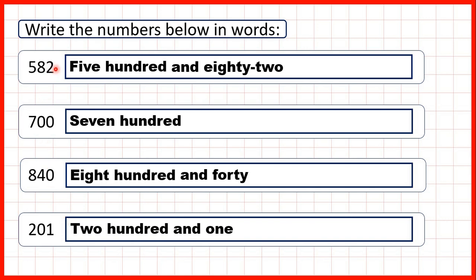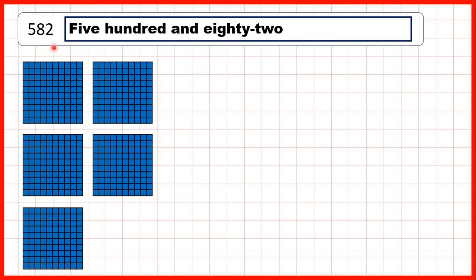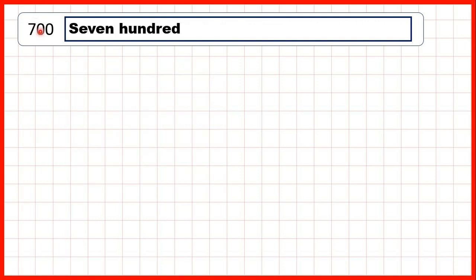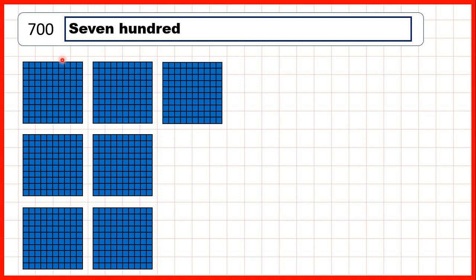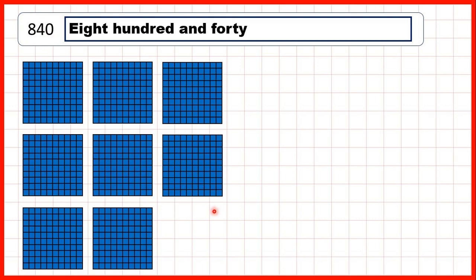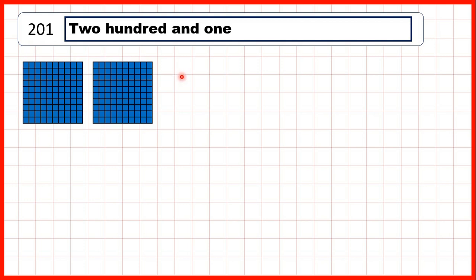Now let's take a closer look at these numbers. First, we had five hundred and eighty-two, so we can show five hundreds, eight tens, and two ones. For seven hundred, we can show seven hundreds, but because we don't have any tens or ones, we don't need to show anything else. Then we had eight hundred and forty, so that's eight hundreds and four tens. And finally, we had two hundred and one, so that's two hundreds, no tens, and one one.